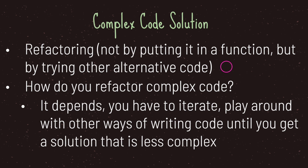To solve the KISS principle, refactor your code — not by just putting code inside a function, but by trying alternative approaches that do the same job. There's no straight or correct answer. In reality if the code is complicated you ask 'how else can I write this?' You try it, see if it improves, and keep iterating. We call that iterating code — you play around with other ways of writing until you reach a less complex solution.